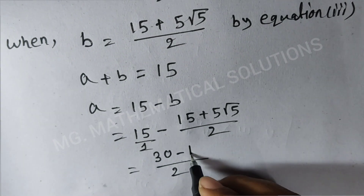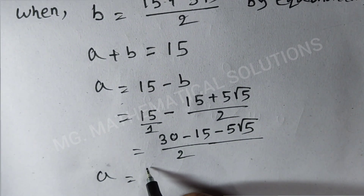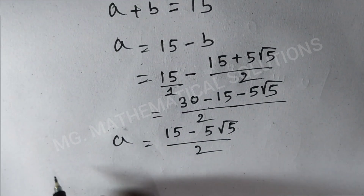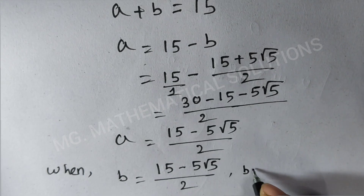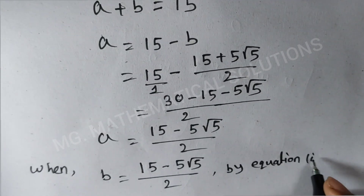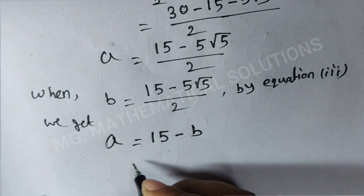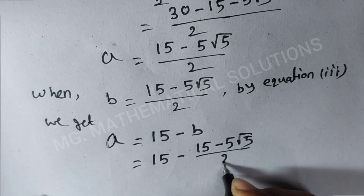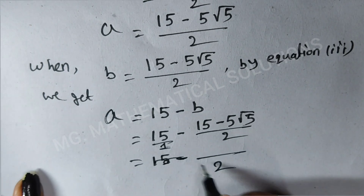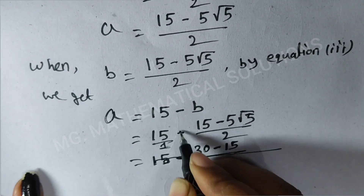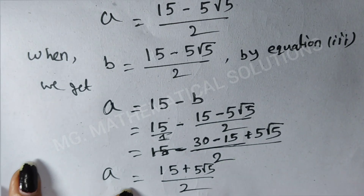Taking LCM of 1 and 2, which is 2: a equal to (30 minus 15 minus 5 root 5) divided by 2, equal to (15 minus 5 root 5) divided by 2. When b equal to (15 minus 5 root 5) divided by 2, then a equal to 15 minus b, giving a equal to (15 plus 5 root 5) divided by 2. This is the final answer.